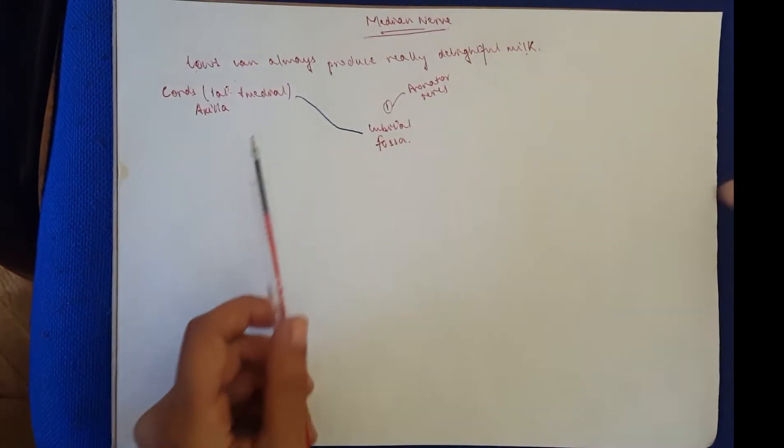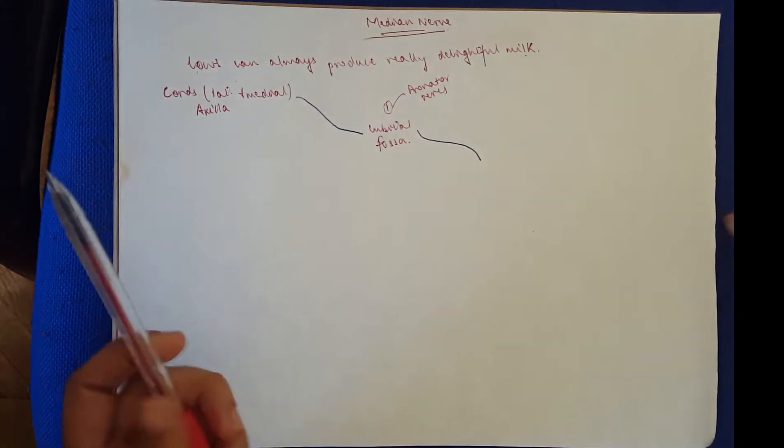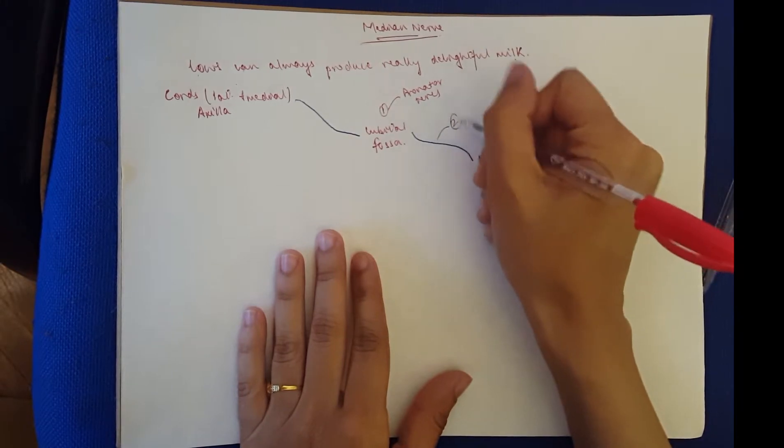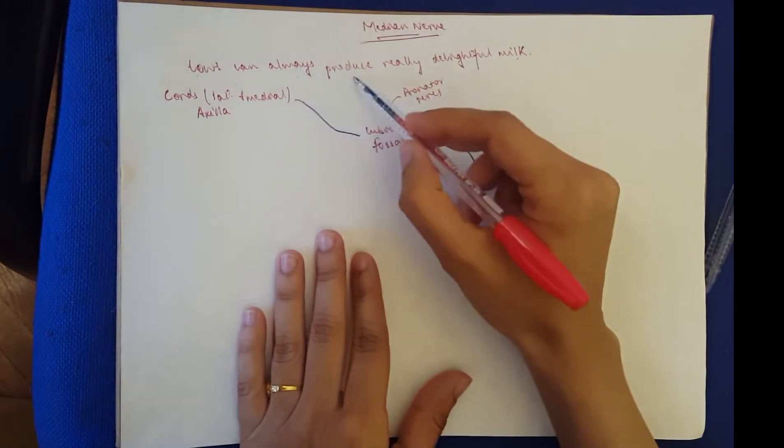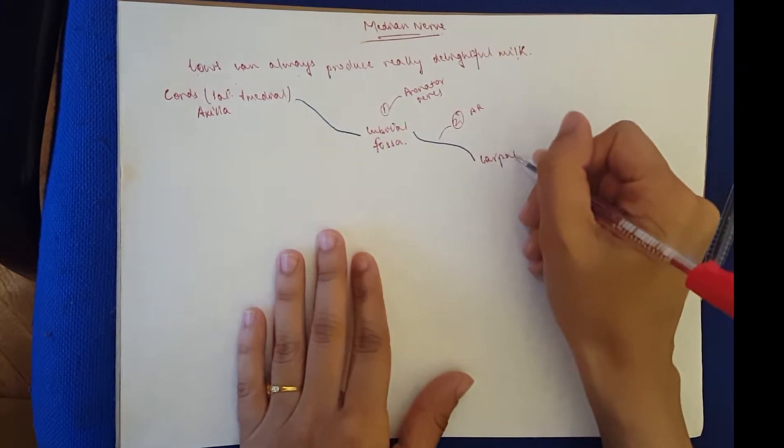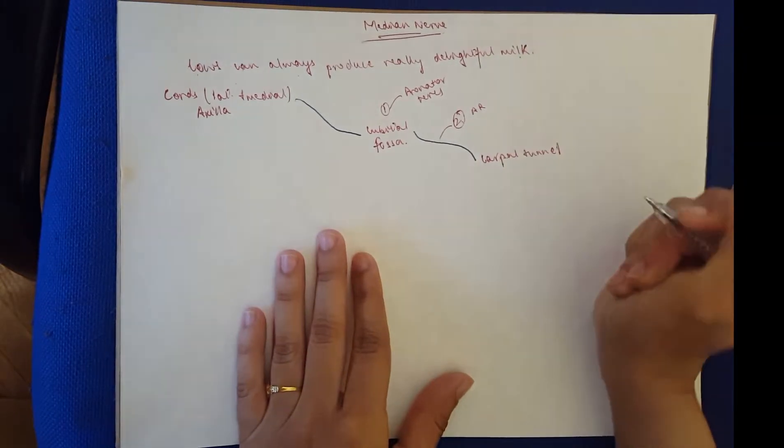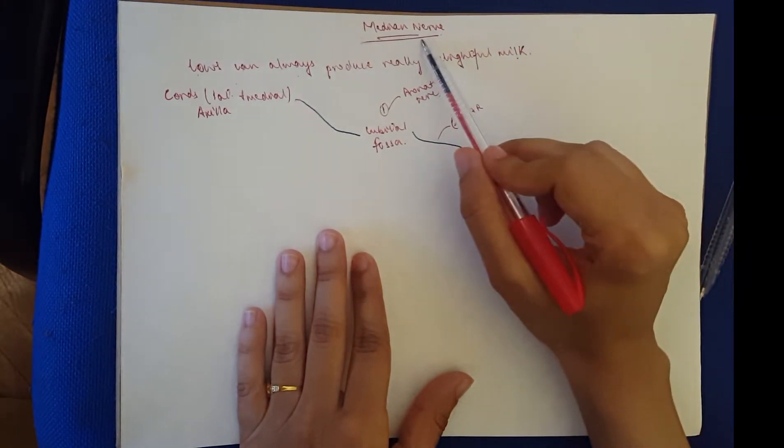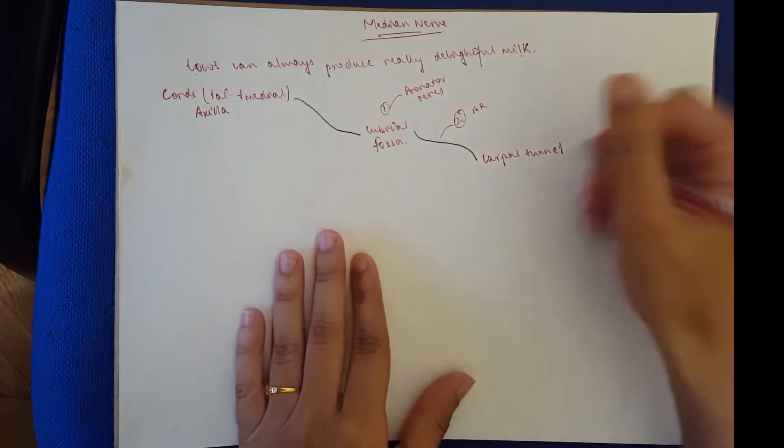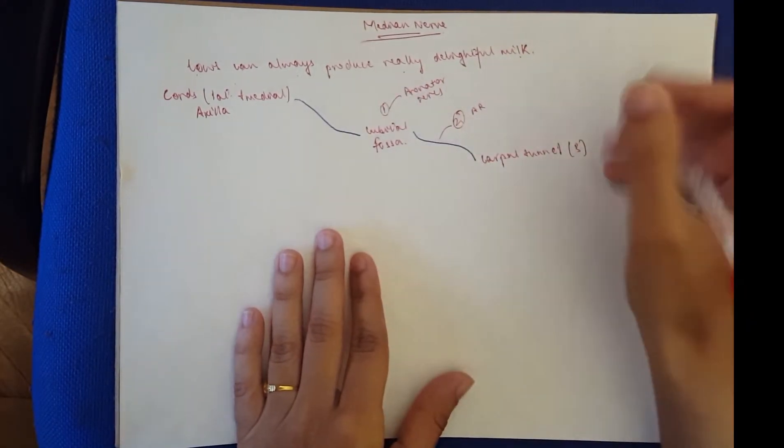After giving this branch, it continues its way down to the carpal tunnel. But before it reaches the carpal tunnel, it gives off two branches and that's where we have produce A and R. At the carpal tunnel here in the hand, there is carpal tunnel syndrome, which is a disability that results when the median nerve is being pressed in the carpal tunnel. As it reaches the hand, it gives three branches and that's our really delightful milk.